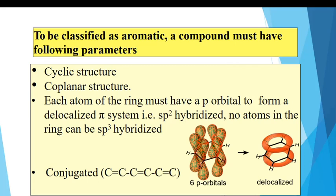Another important parameter is that in a cyclic compound, the ring system must be conjugated — that is, conjugation must be present, which is the presence of a carbon double bond, carbon single bond, carbon double bond structure (C=C-C=C).